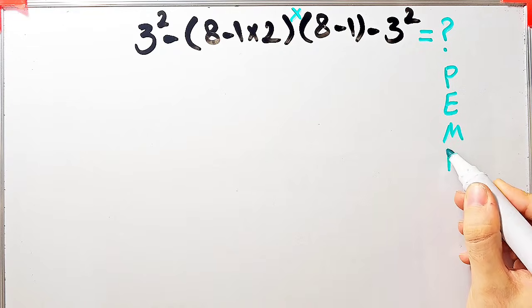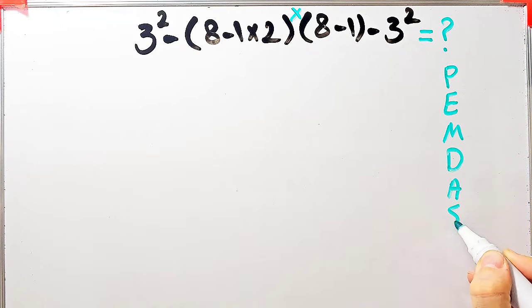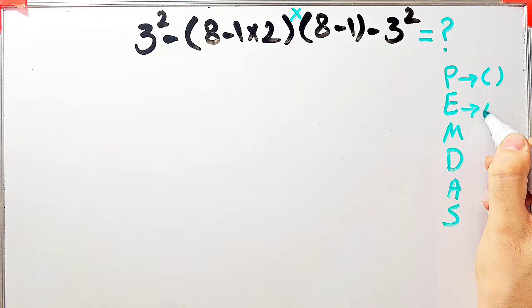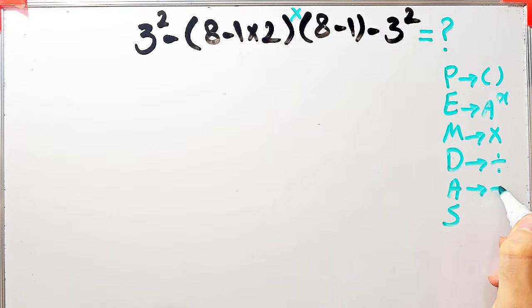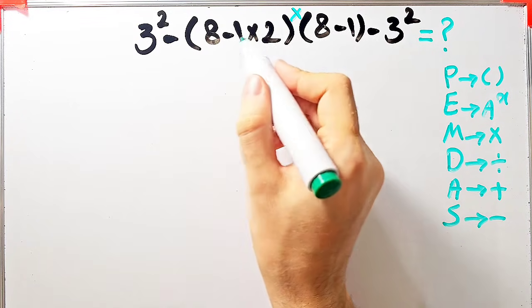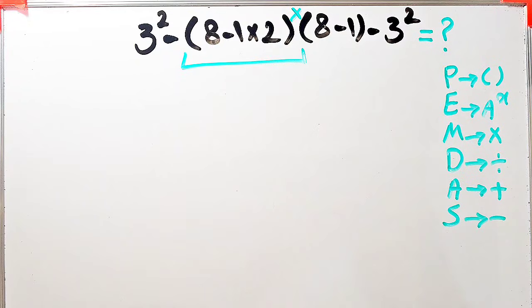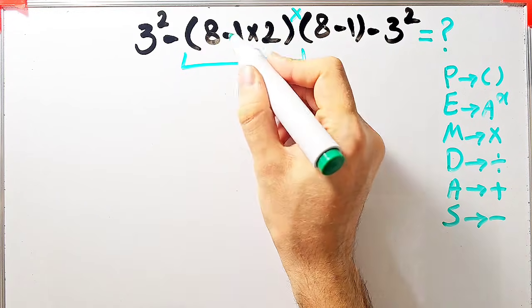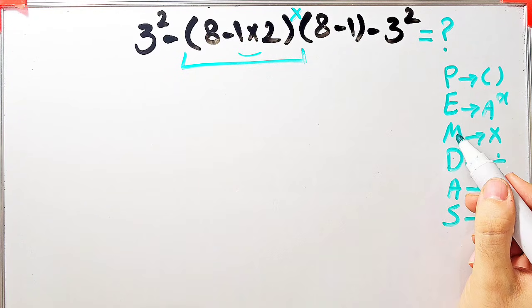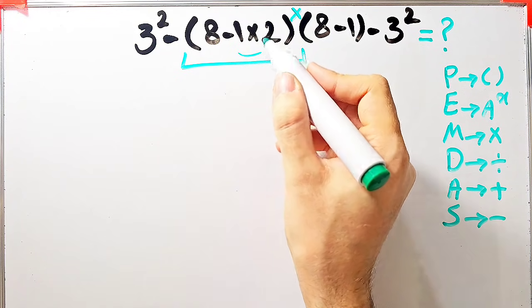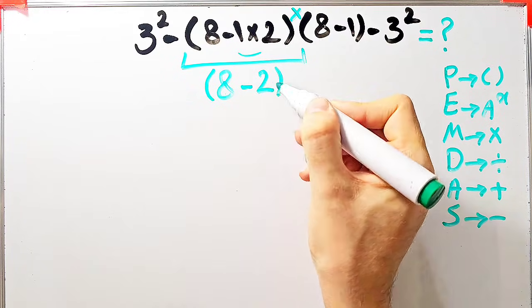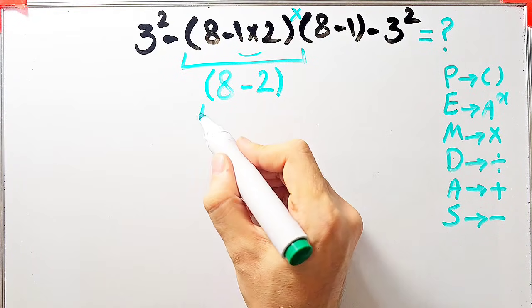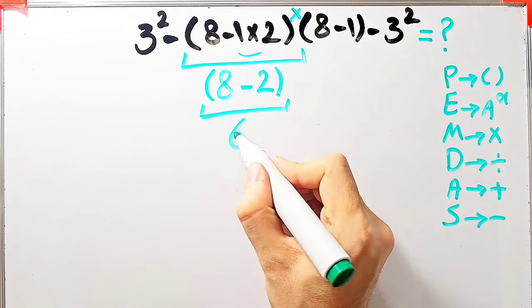To get the right answer you must follow PEMDAS. P stands for parentheses, E for exponent, M for multiplication, D for division, A for addition, S for subtraction. First we simplify the parentheses. Inside the first parenthesis we have subtraction and multiplication. Multiplication has higher priority, so 1 times 2 equals 2. Then 8 minus 2 equals 6.